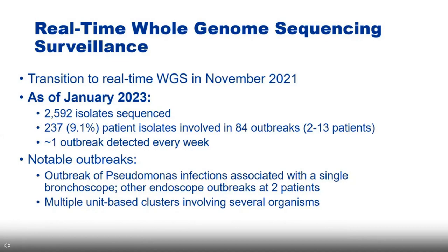We started real-time sequencing surveillance in November 2021. As of January 2023, we've sequenced over 2,500 isolates, with about 9% — 237 isolates — related across 84 different outbreaks ranging from 2 to 13 patients. We detect about one new outbreak or one new patient every single week. Many of the larger outbreaks are vancomycin-resistant Enterococcus driven by rectal carriage. Notable findings include an outbreak of Pseudomonas infections associated with a single bronchoscope, and multiple endoscope outbreaks detected at two patients — removing the scope immediately stops transmission.